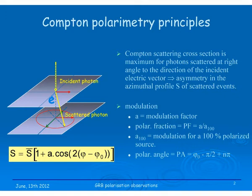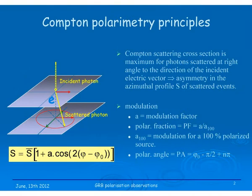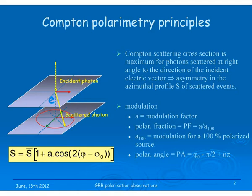A few words about the principle, which you have heard already many times. We use Compton scattering to measure polarization. You have two detectors: one incident photon makes a Compton scattering, and then the scattered photon makes a deposit in a second detector. This distribution is not homogeneous if the signal is polarized — it follows a specific formula. By analyzing this distribution in real data, we can extract the polarization properties, in particular the polarimetric angle from the minimum of the distribution and the polarization fraction using the modulation factor A.